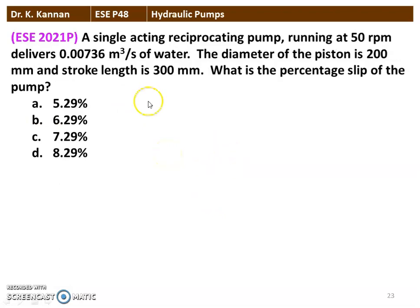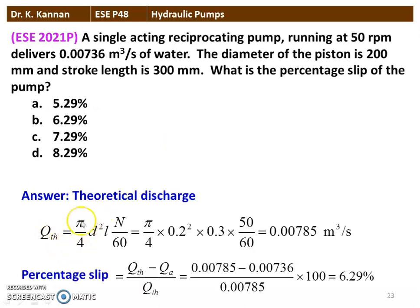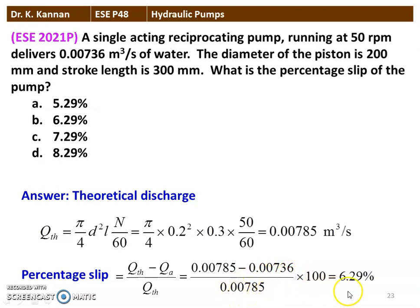The next question from the 2021 question paper: A single acting reciprocating pump running at 50 RPM delivers 0.00736 cubic meters per second of water. The diameter of the piston is 200 millimeter and the stroke length is 300 millimeter. What is the percentage slip of the pump? The theoretical discharge equals (pi/4)·D²·L·N/60 = (pi/4) × 0.2² × 0.3 × 50/60 = 0.00785 cubic meters per second. Percentage slip = (theoretical discharge − actual discharge) / theoretical discharge = (0.00785 − 0.00736) / 0.00785 = 6.29%. The correct answer is option B, 6.29%.